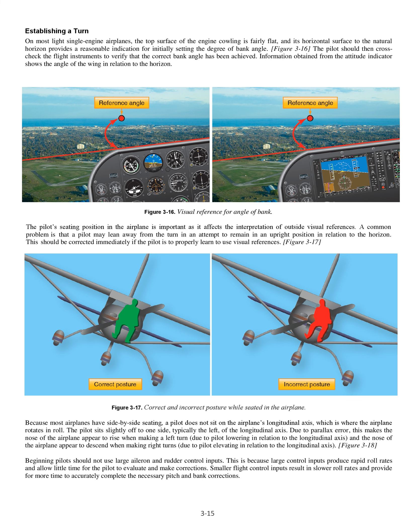Due to parallax error, this makes the nose of the airplane appear to rise when making a left turn (due to pilot lowering in relation to the longitudinal axis), and the nose of the airplane appear to descend when making right turns (due to pilot elevating in relation to the longitudinal axis). Beginning pilots should not use large aileron and rudder control inputs, because large control inputs produce rapid roll rates and allow little time for the pilot to evaluate and make corrections. Smaller flight control inputs result in slower roll rates and provide more time to accurately complete the necessary pitch and bank corrections.